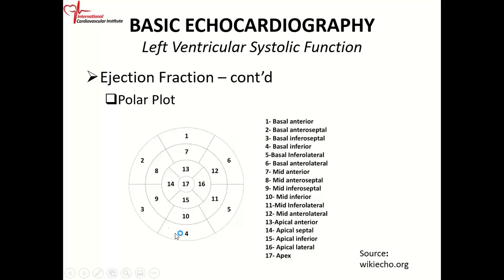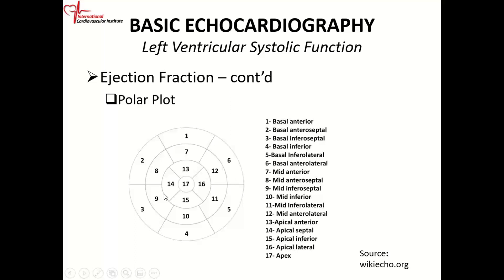At the base, where you have the mitral valve, we also divide into six segments: anterior wall, inferior wall, inferior lateral wall, anterior lateral wall, anterior septum, and inferior septum. In computer-driven reports, the polar plot gives a wall motion score for each segment. When all scores are one, the plot is green — you're looking at a normal heart. It may show two for hypokinesis or three for akinesis. The polar plot immediately shows you where the problem is.